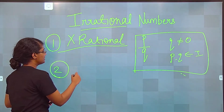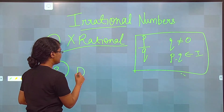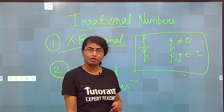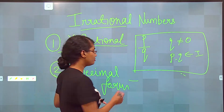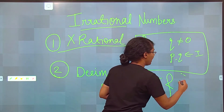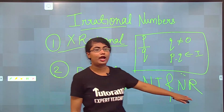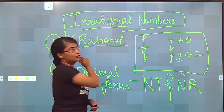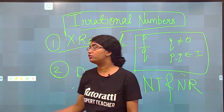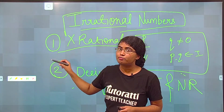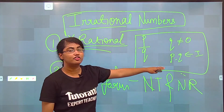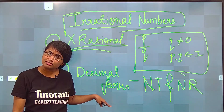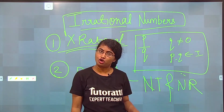What is the second definition? The second one is its decimal format. What is the decimal format of irrational numbers? Non-terminating and non-recurring. This is our decimal form. So today's lecture is going to revolve around these two concepts: first, irrational numbers cannot be represented in the form of p upon q; and second, their decimal form is non-terminating and non-recurring. Shall we proceed?